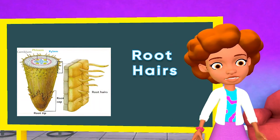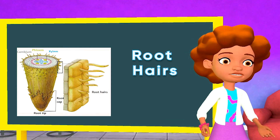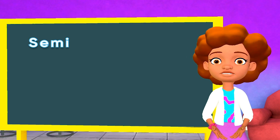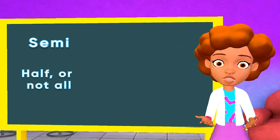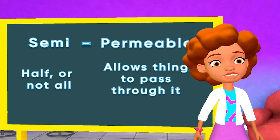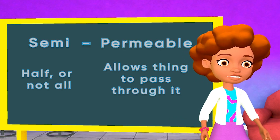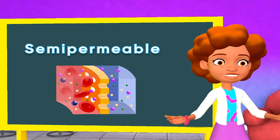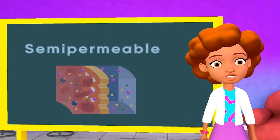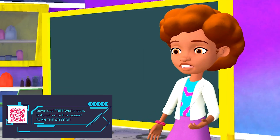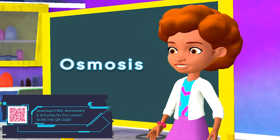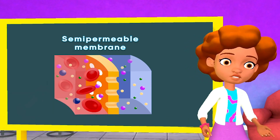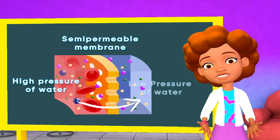The tertiary roots, also known as root hairs, have very unique cells. The membranes of their cells are semi-permeable. Semi means half or partially but not all. Permeable describes how a material lets liquids or gases pass through it. Semi-permeable means the material will let specific things pass through it, but not everything. A semi-permeable membrane is the root cause of water uptake in plants. Water can enter the cells of the root hairs by a process called osmosis. Osmosis refers to the process by which water passes through a semi-permeable membrane from an area where there's lots of water to an area where there's not so much water.